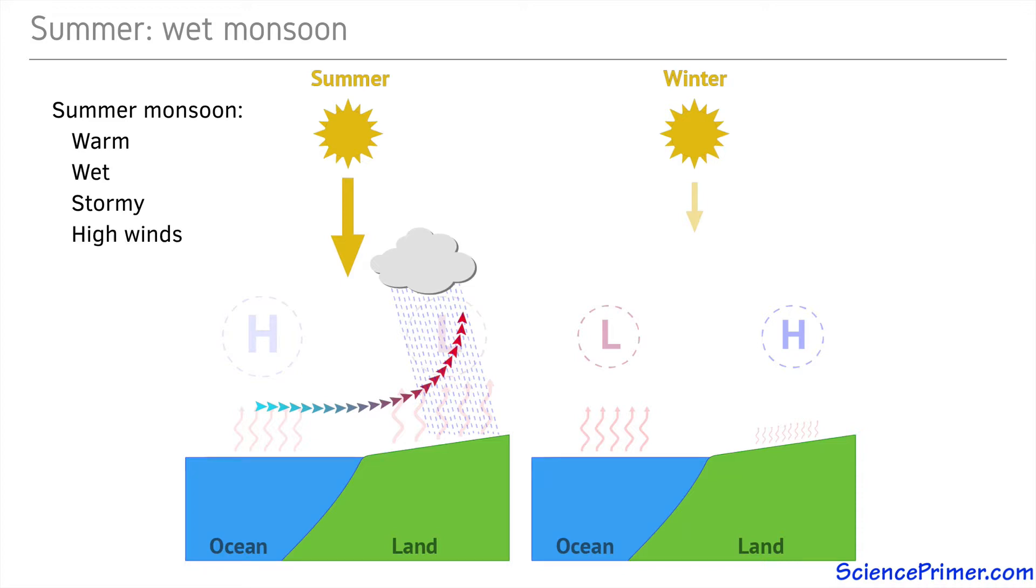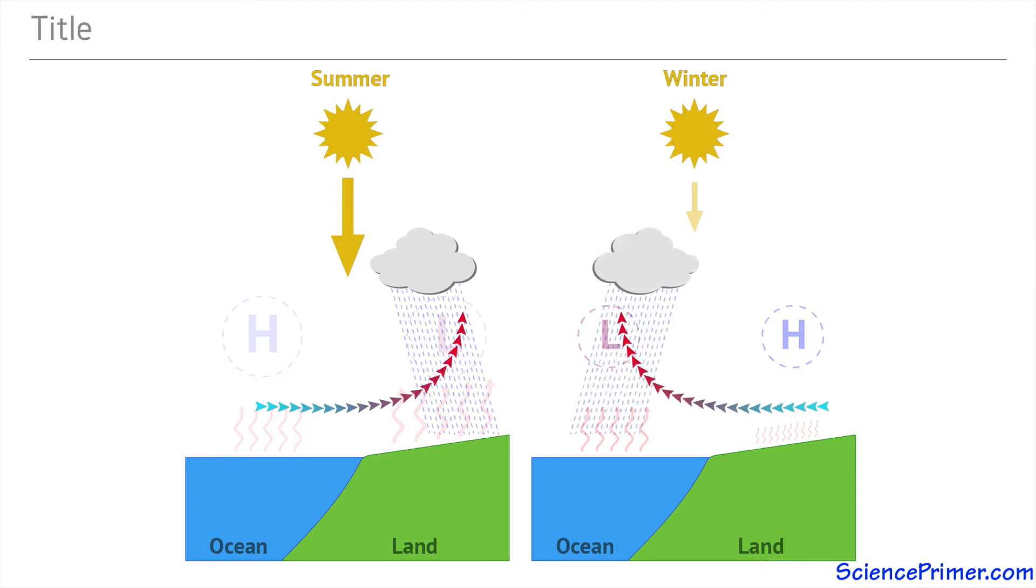In the winter, when the regions of high and low pressure flip and winds blow from land to sea, the rising air and stormy weather occur out to sea, making conditions over land during the winter monsoon cooler, drier, with fewer storms and often lighter winds due to the fact that the pressure gradient between land and sea is not as great.